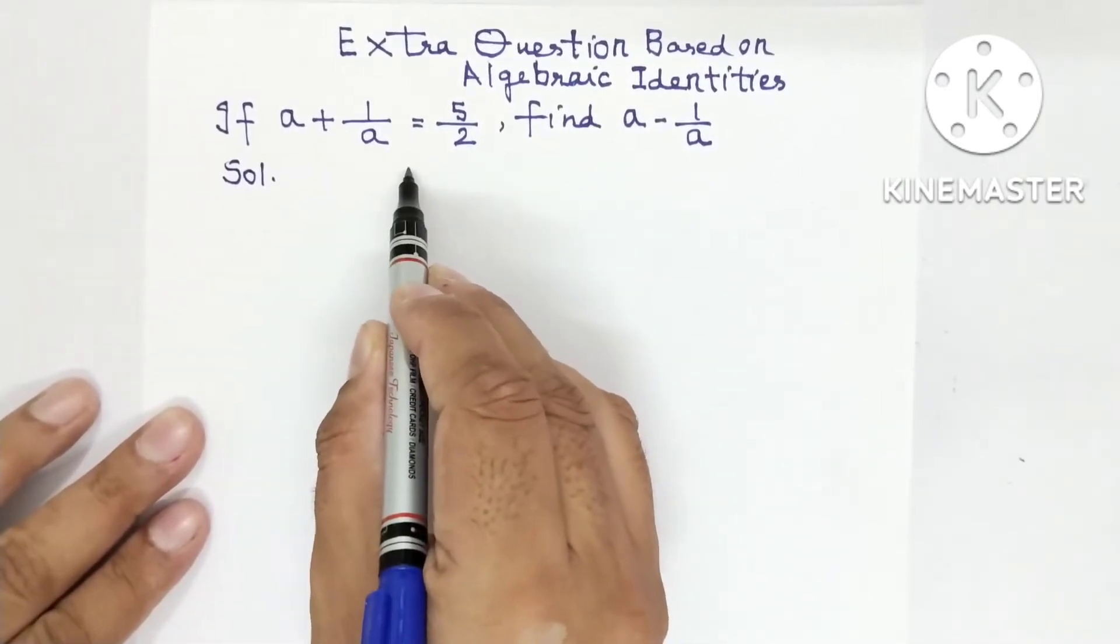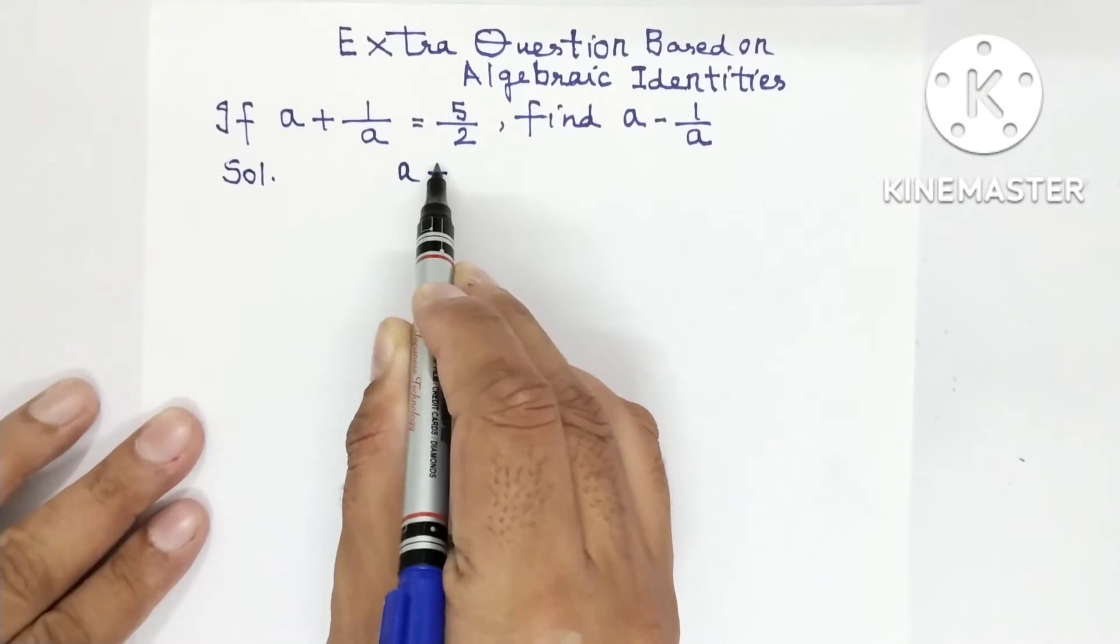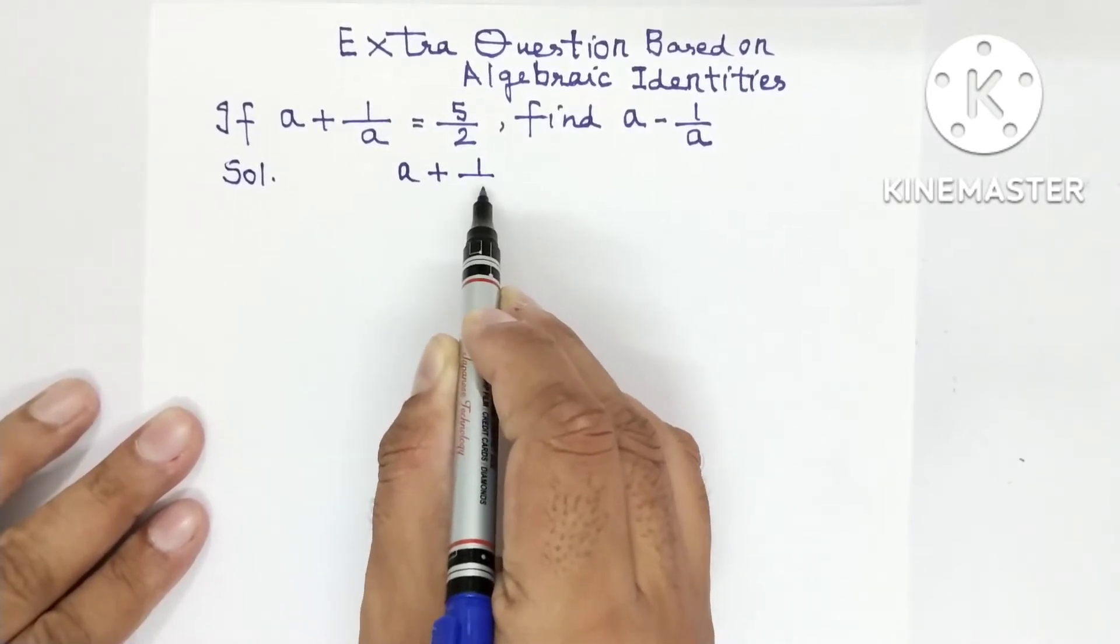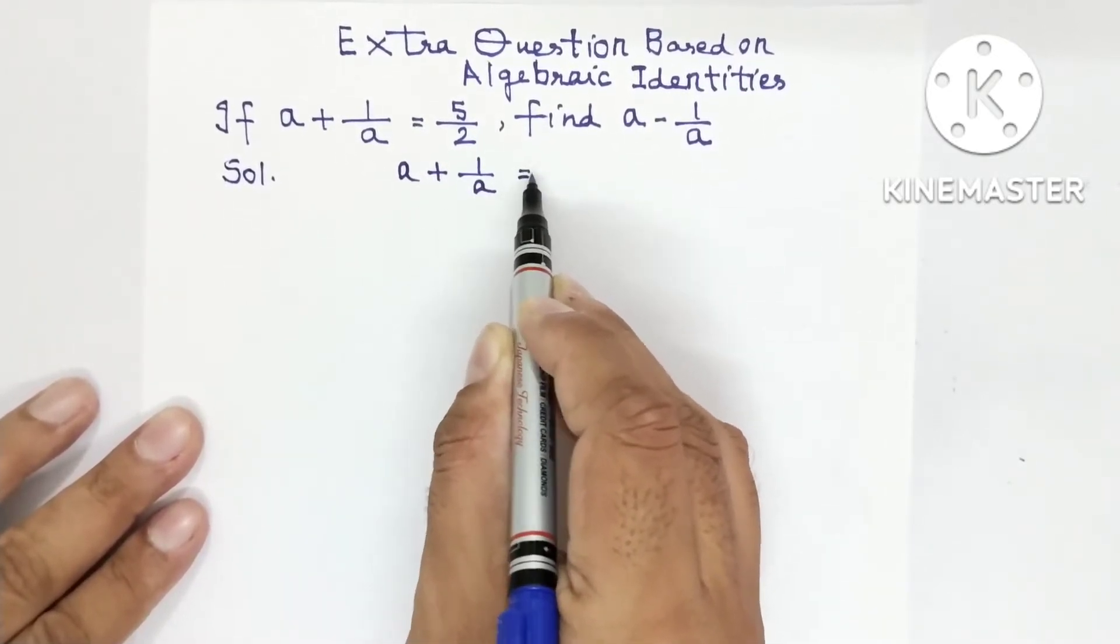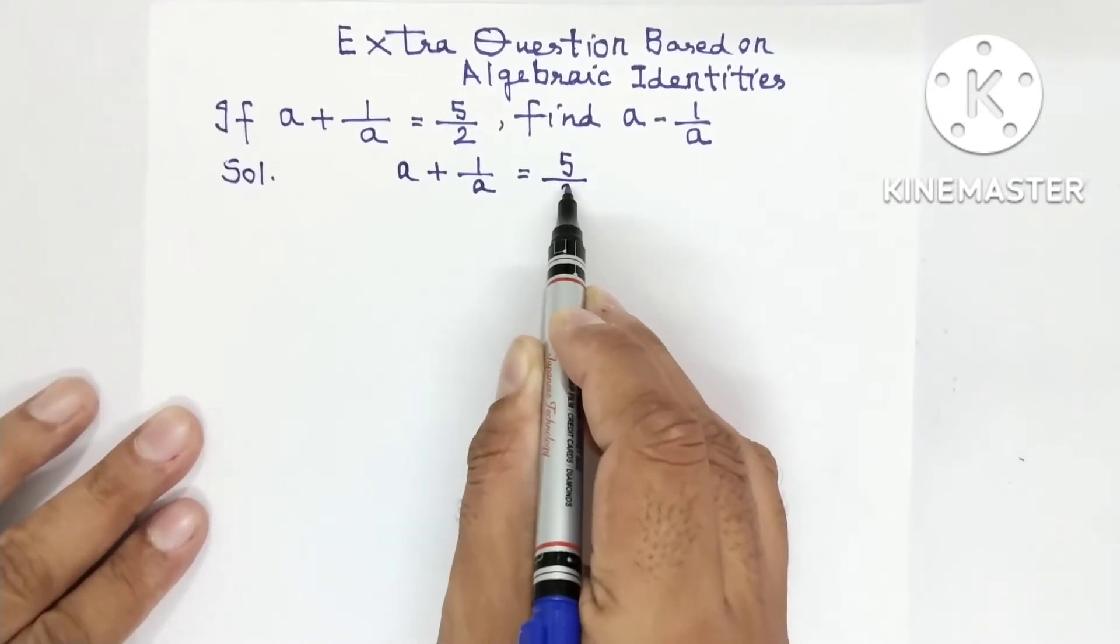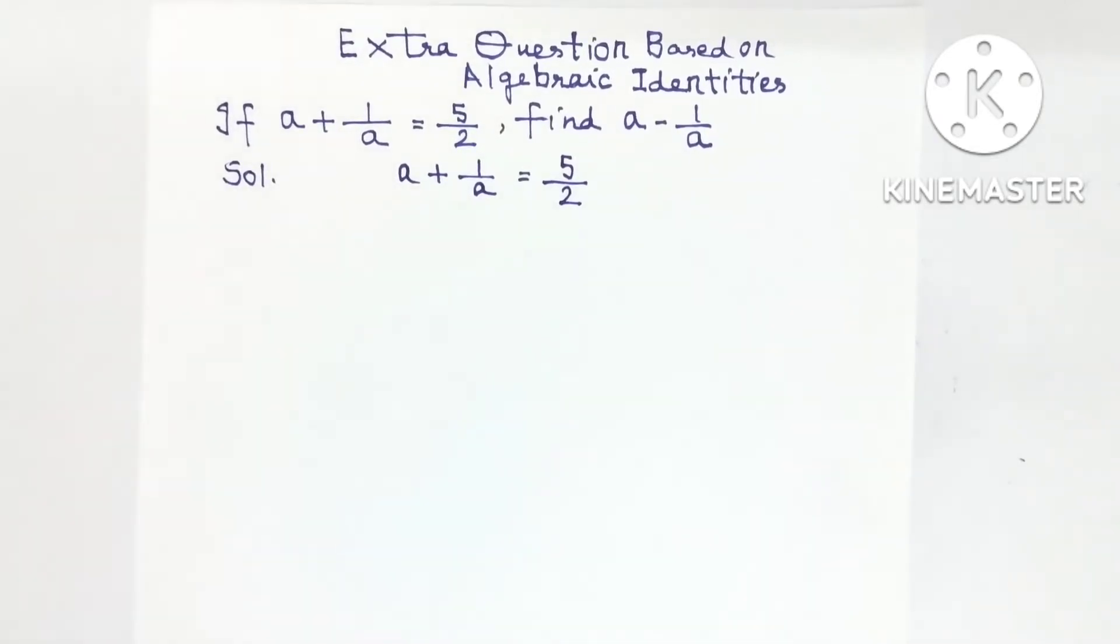You are given a + 1/a = 5/2 and you are supposed to find a - 1/a.